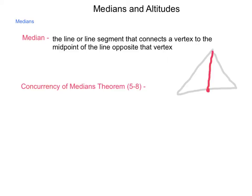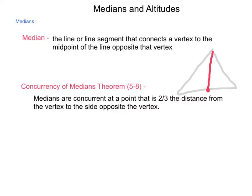Now, theorem 5-8 is called the concurrence of medians theorem, and it tells us that the medians are concurrent at a point that is two-thirds the distance from the vertex to the side opposite the vertex. So if I were to draw the medians in for all three sides here, they would meet at a specific location, and this section is two-thirds of the entire median.